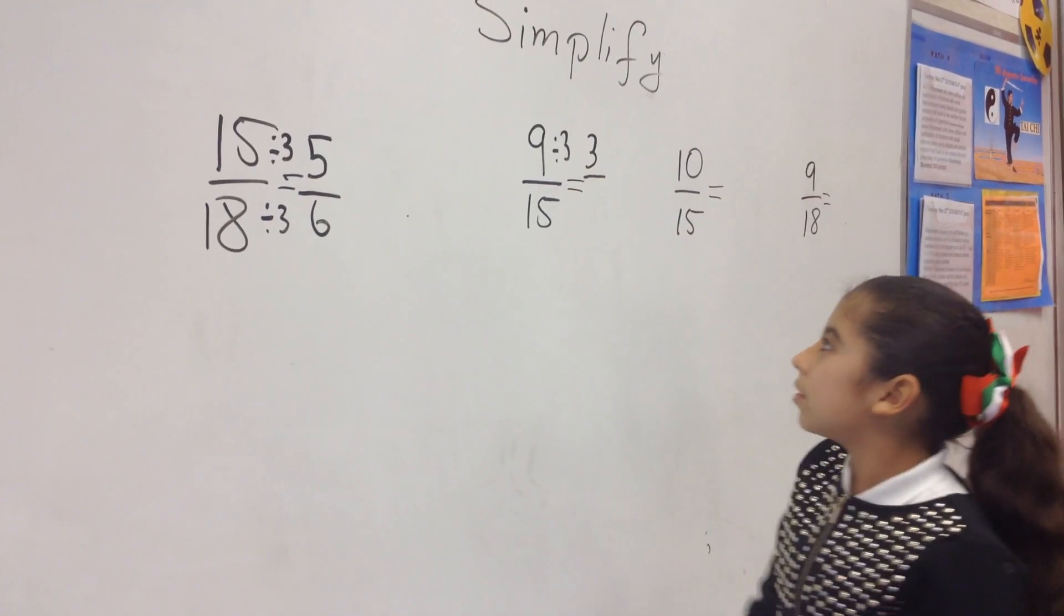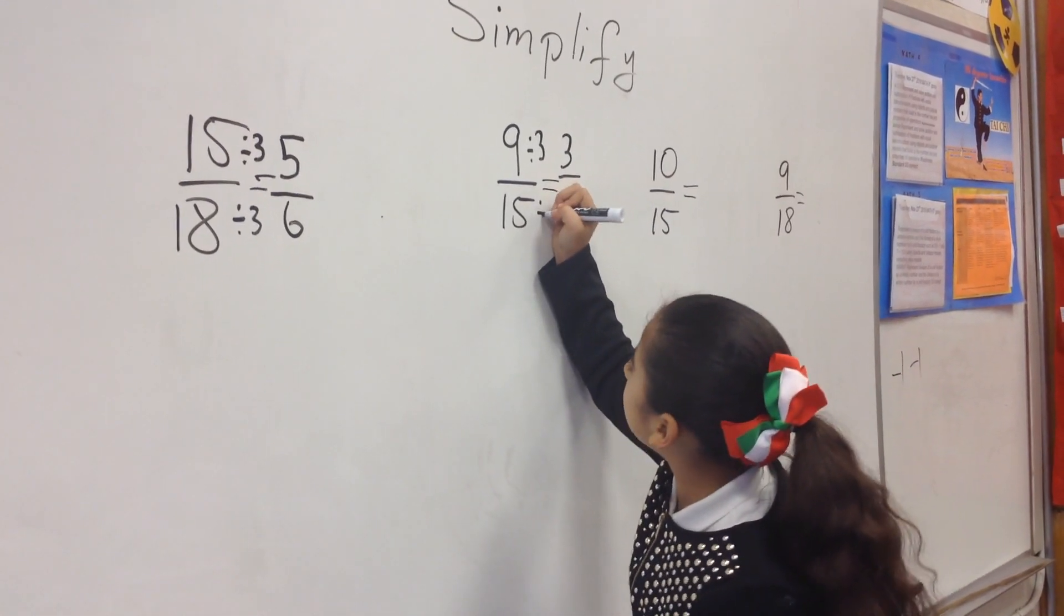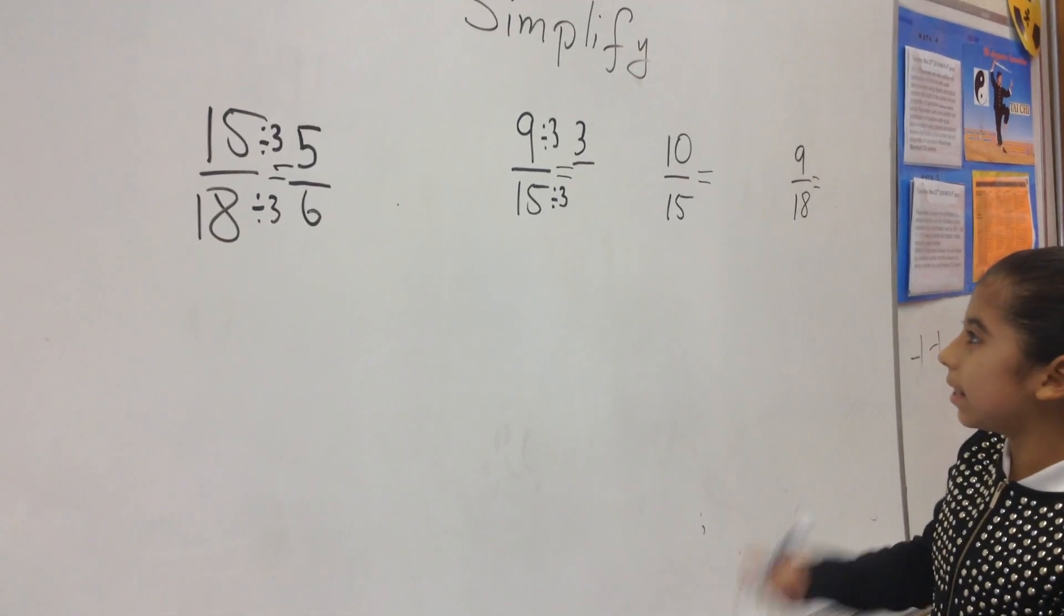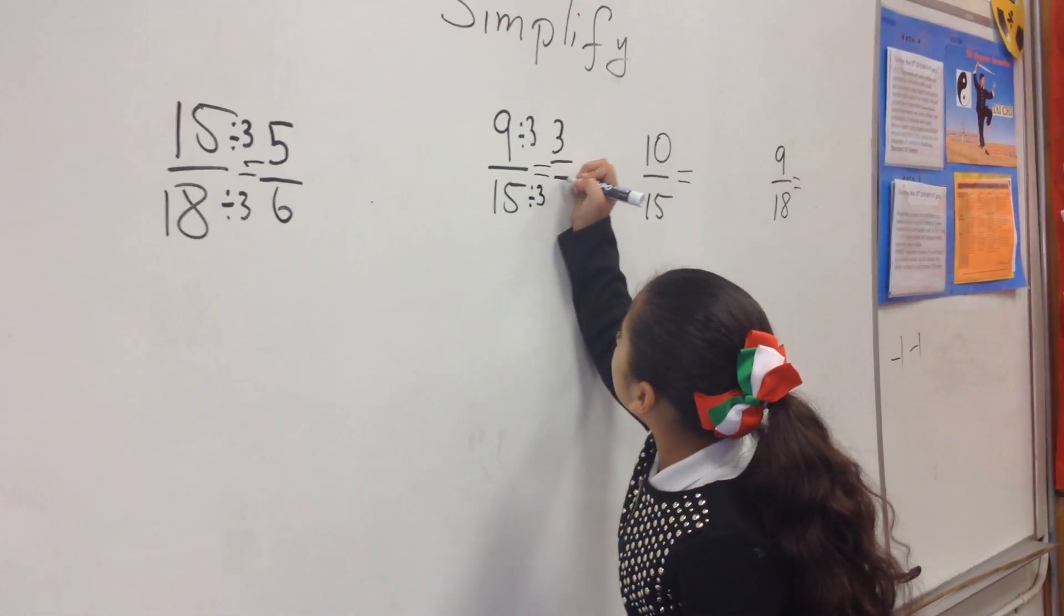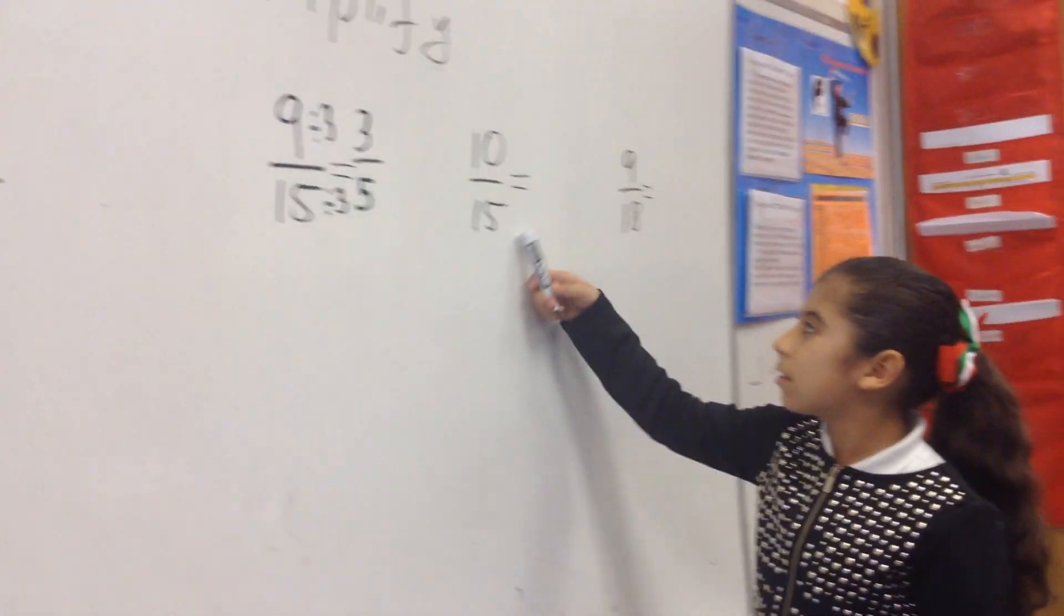What you did to numerator you do to denominator, divided by 3. 15 divided by 3 is 5. 10, 15, it goes to something.